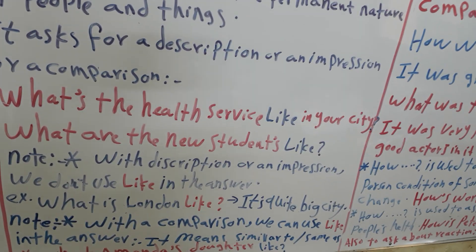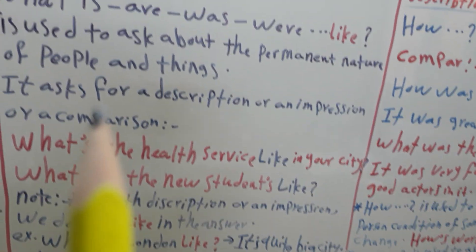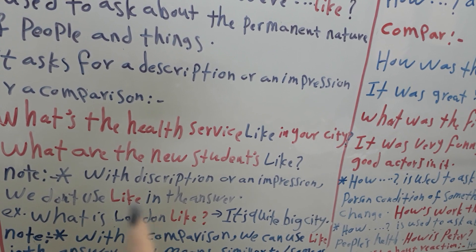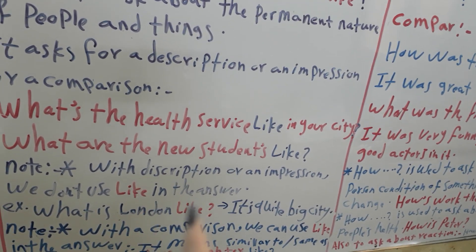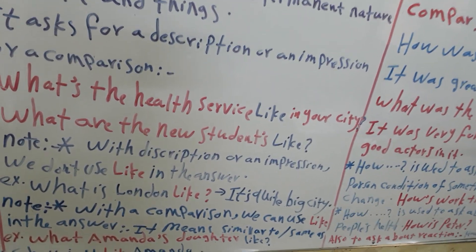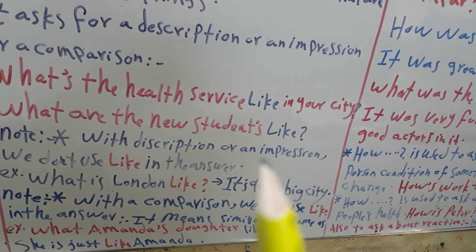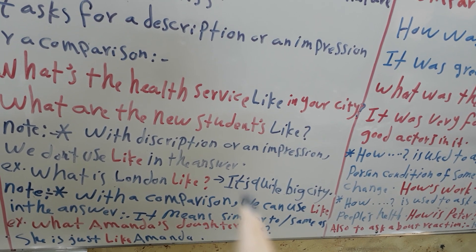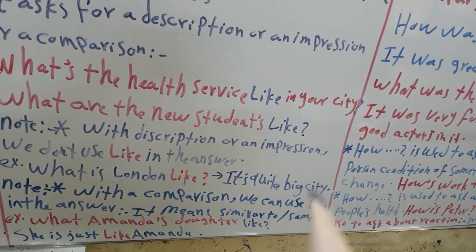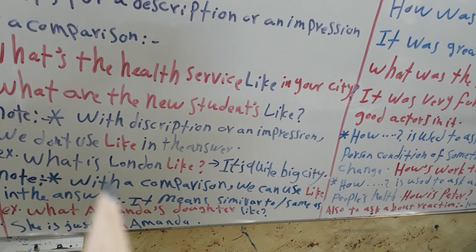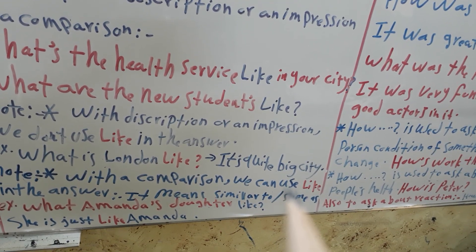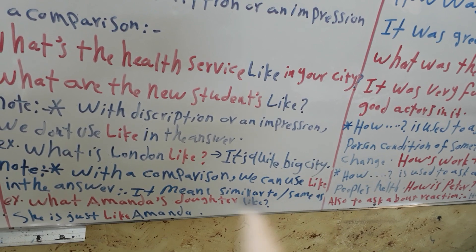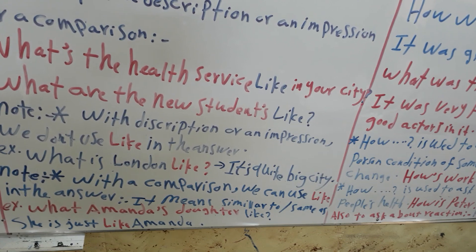We should know there are some notes about using 'what ... like' at the end of a question. Sometimes we use 'like' in the answer and sometimes we don't. The first note: with description or elaboration, we don't use 'like' in the answer. For example: 'What is London like?' — Answer: 'It's quite a big city.' We didn't use 'like' in the answer. But with a comparison sentence, we can use 'like' in the answer, and it means 'similar to' or 'same as'.